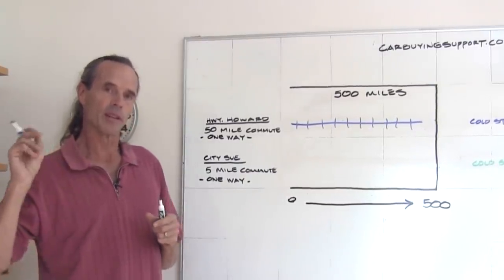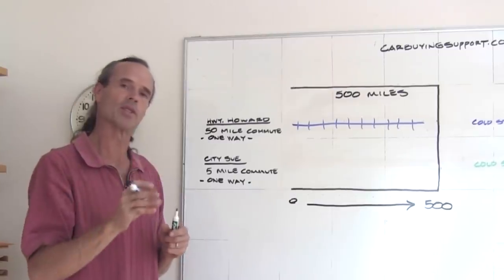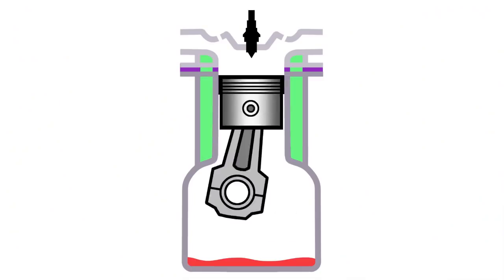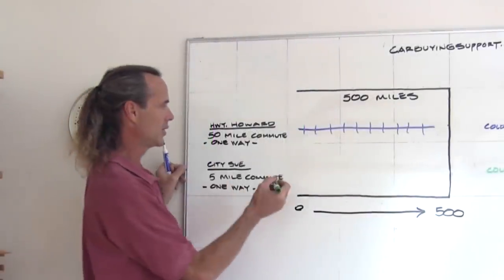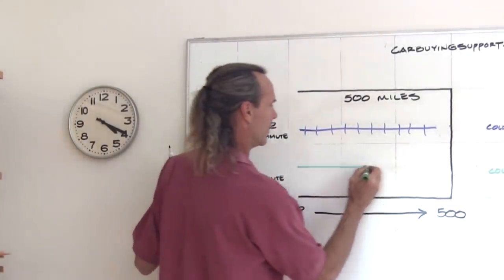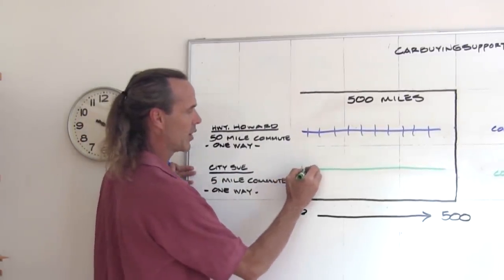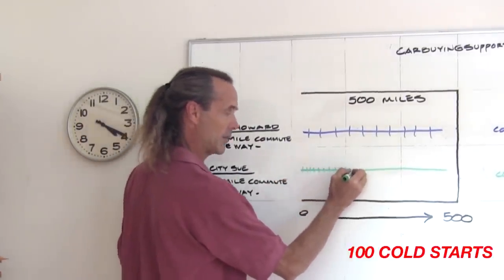Now, City Sue, by the way, has a different type of commute, and she's cold starting her car a hundred times, right?